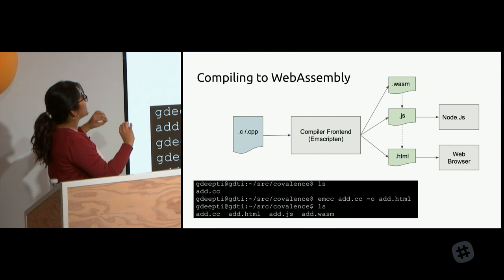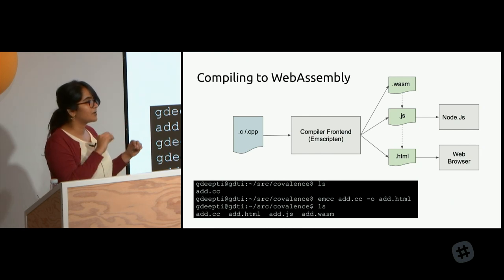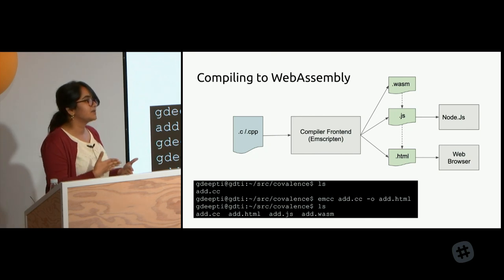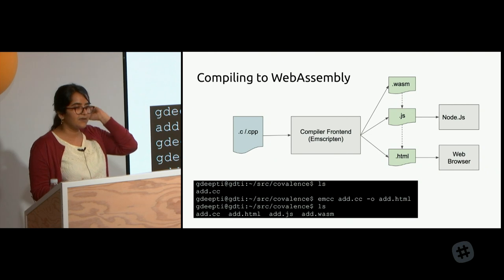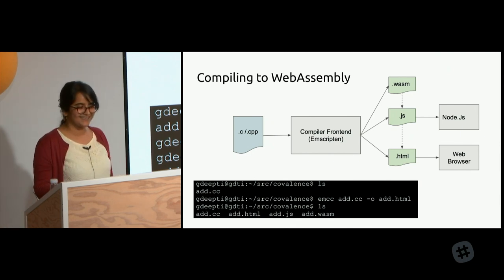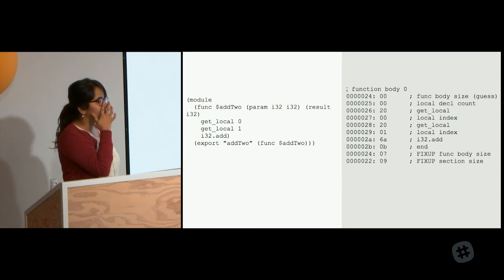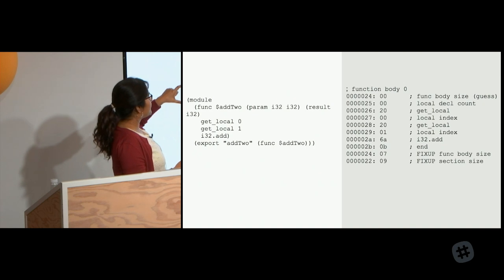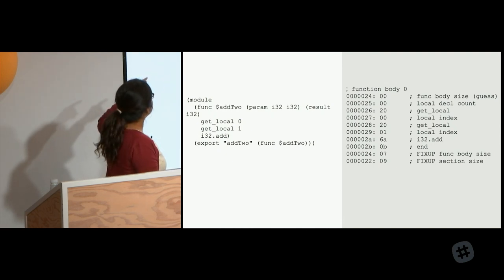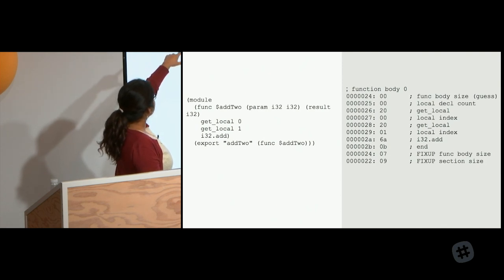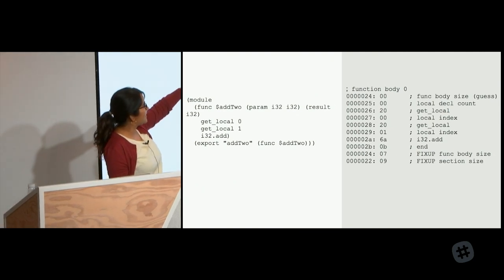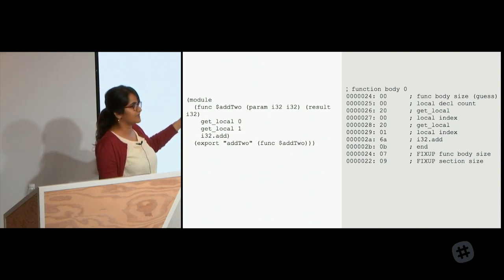So when you have a .wasm file, what is inside the binary and how do we find out what's happening? You can use a toolkit called WABT - the WebAssembly Binary Toolkit - to disassemble the .wasm file. When you disassemble this, I've only pasted a snippet, but when you have a C file that just adds two numbers, you can see it says 'add two' - you have two int32 parameters and a result which is also an int32. These parameters are represented as locals, and those would be the WABT bytes you see when you disassemble something like this.